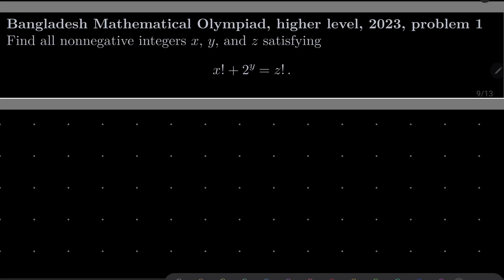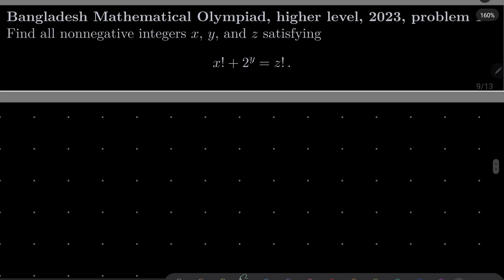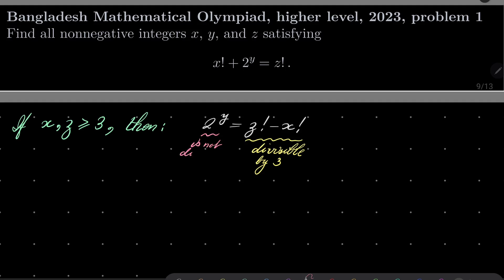Right. So first, notice that if x and z are greater than or equal to 3, both of them, then we have the following problematic equation: 2 to the power of y equals z factorial minus x factorial, but we have a problem because this is divisible by 3, but this isn't. We have a contradiction right away.